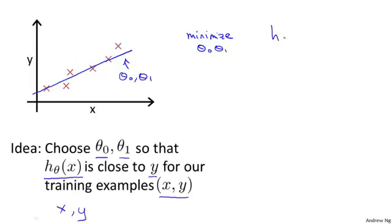And I want this to be small, right? I want the difference between h of x and y to be small. And one thing I might do is try to minimize the square difference between the output of my hypothesis and the actual price of the house. So let's fill in some details.